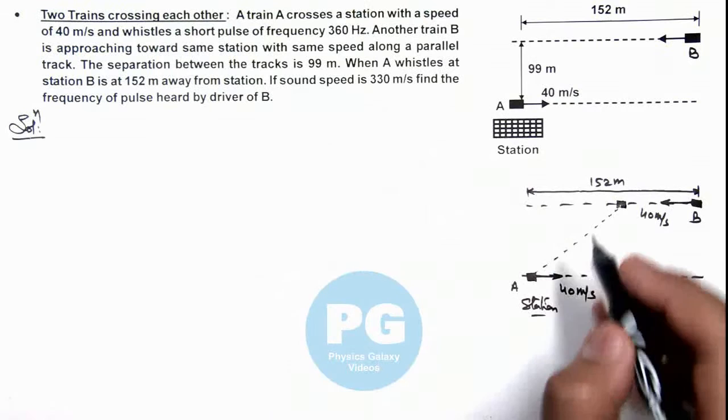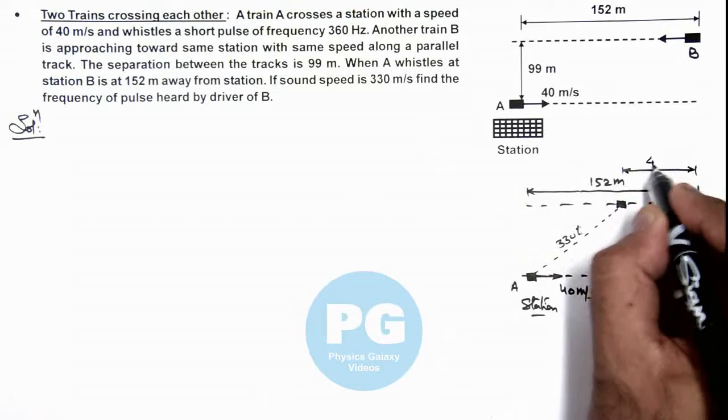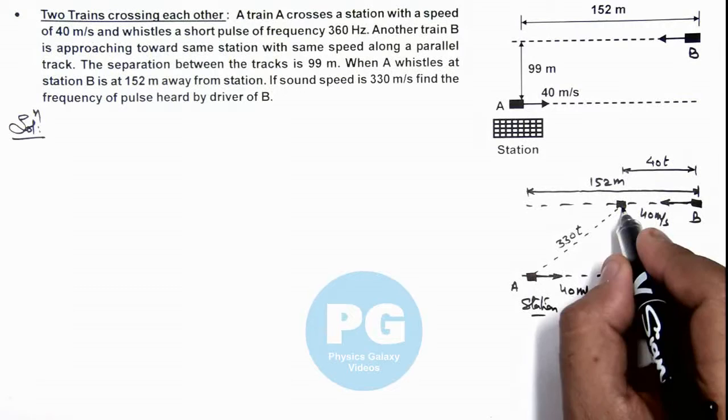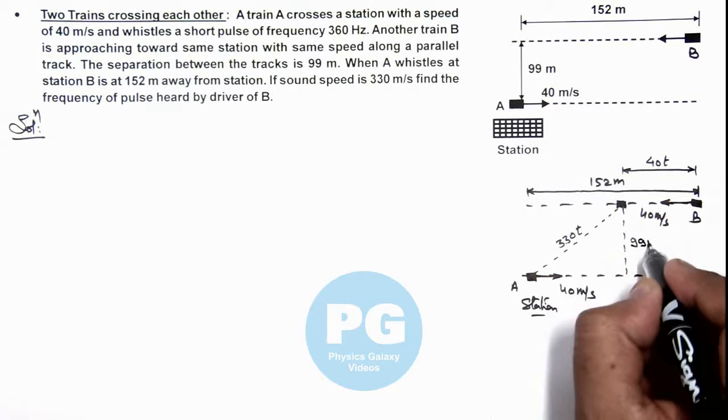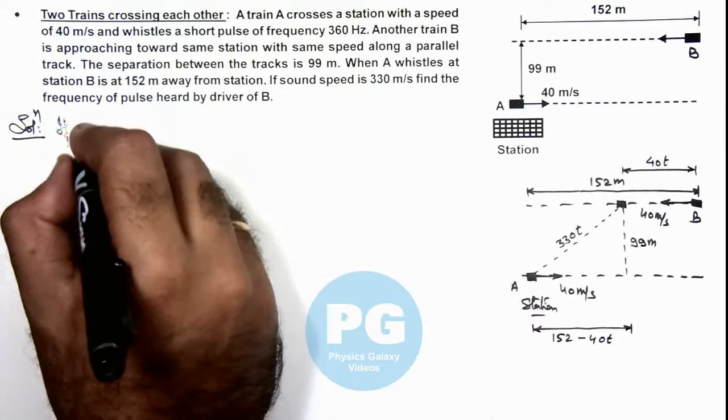If sound velocity is 330 meters per second, this distance can be written as 330t, and the distance B has traveled before it receives the sound will be 40t because its velocity is 40. So here we can use in this triangle the Pythagorean law, as this is 99 meters and this distance we can write as 152 minus 40t.